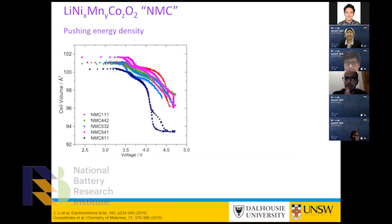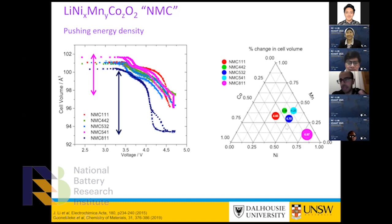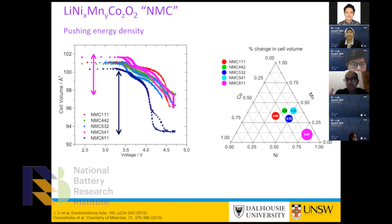Professor Katani was talking about NMC. Here's an example looking at different NMC compositions in in-situ experiments, showing the change in cell volume — lattice parameters as a function of voltage. Almost immediately you can see some compositions have a large volume change. NMC 811, which has the highest capacity, also has the largest volume change. In a battery, large volume change really affects lifetime. You can make a phase diagram showing percentage change in cell volume as a function of composition. You want to minimize volume change for longer lifetime, but 811 gives the most capacity — it's a conundrum.